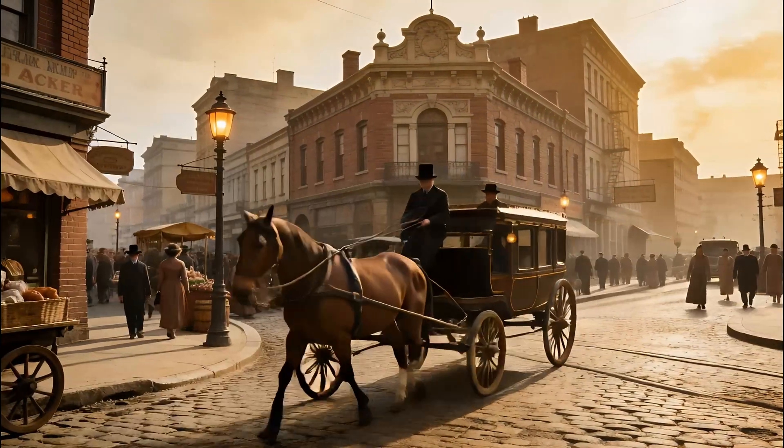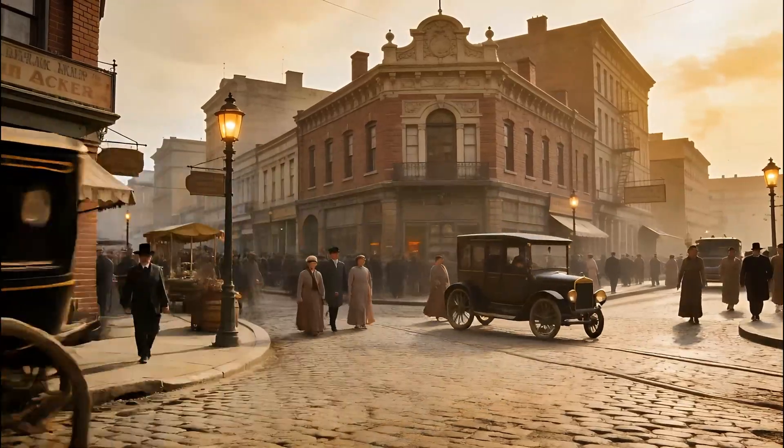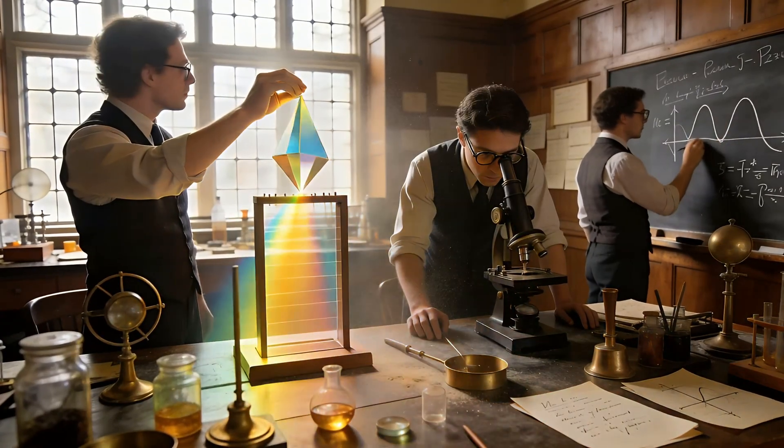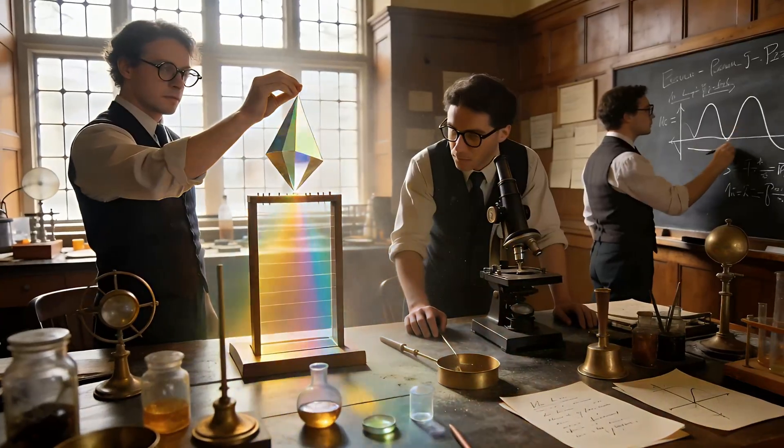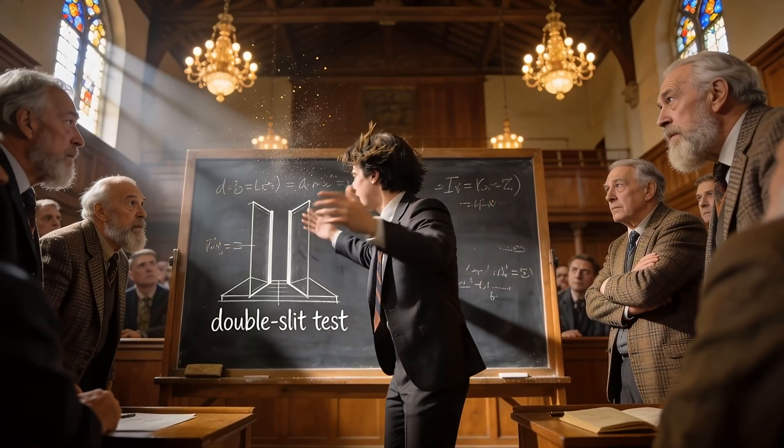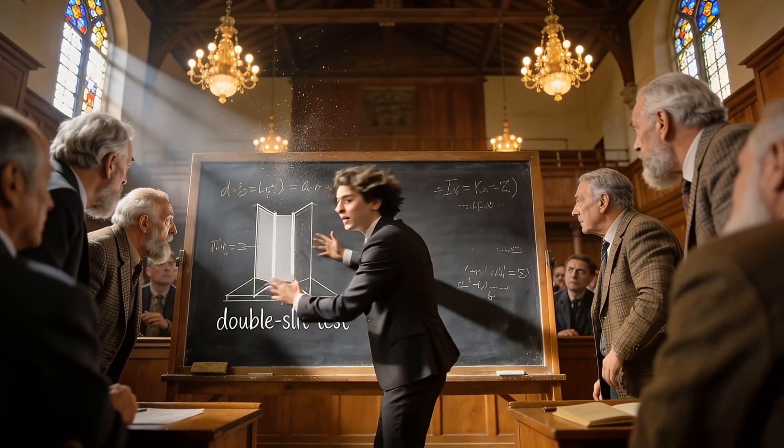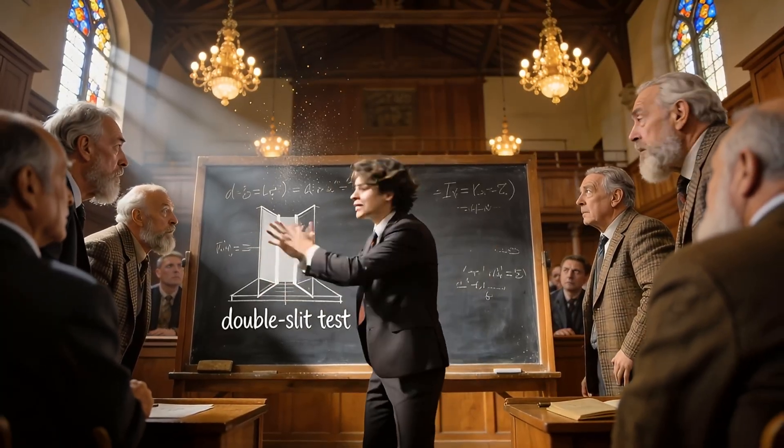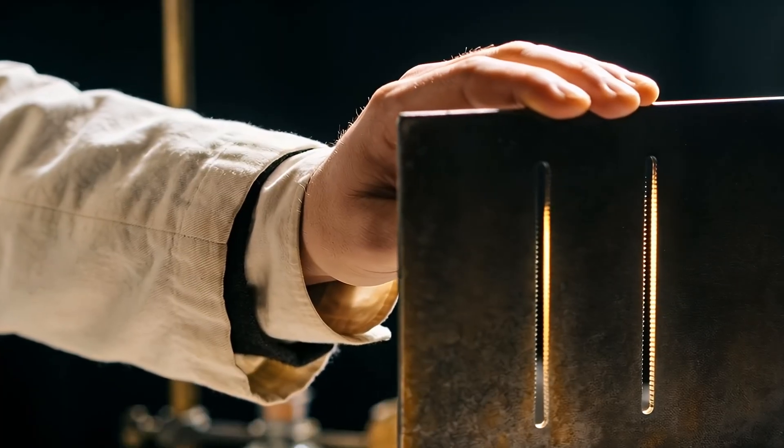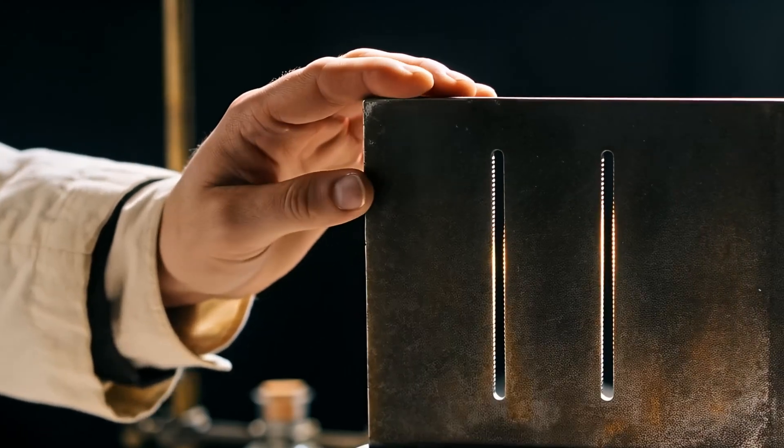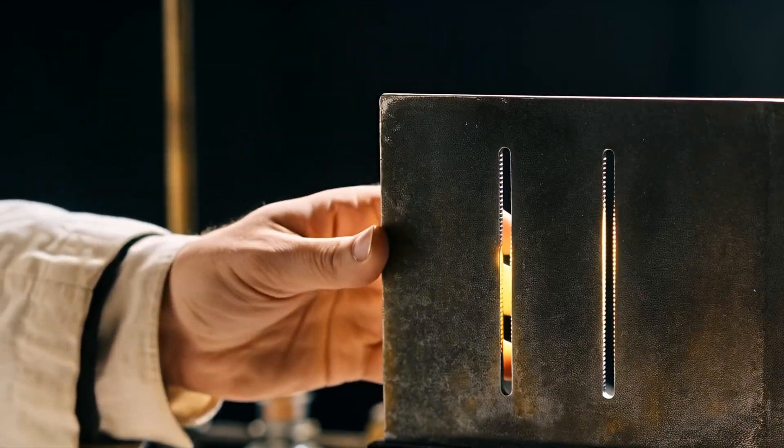Picture this. Back in the early 1900s, scientists were trying to figure out if light is a wave or a particle. To test this, they came up with the double slit experiment. It's simple but revolutionary. You take a screen with two narrow slits close together, then you shine light through them onto a wall behind.